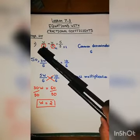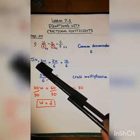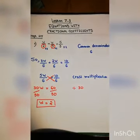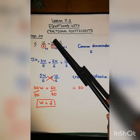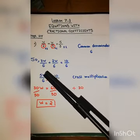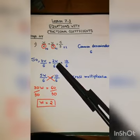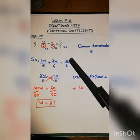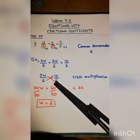To fix the denominator two to be six, we multiply by three — but when we multiply the denominator by three, we also multiply the numerator by three, giving us three w over six. For the second fraction, we multiply three by two to get six, and five times two gives ten over six. Now all denominators are the same, so three w plus two w equals five w over six, and the right side is ten over six.